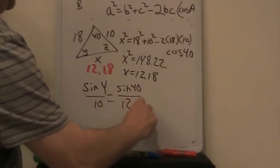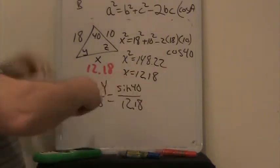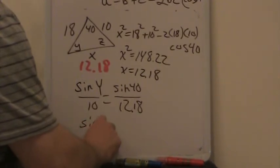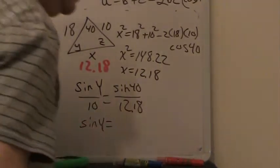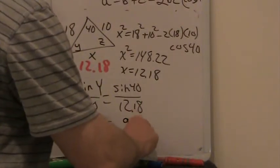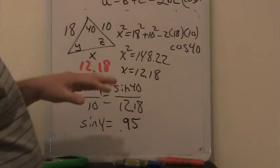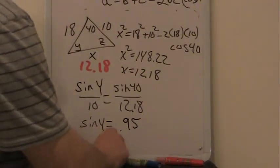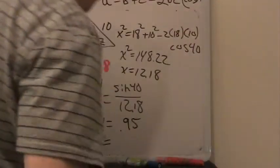Now we've got that side figured out. You would cross multiply and divide. And what you end up with here is the sine of y is equal to 0.95. Then you go second sine on your calculator, second button sine, or sine⁻¹, just like we did in homework yesterday. y then would be equal to 71.8 degrees.